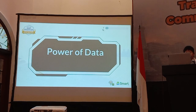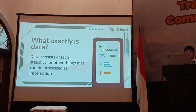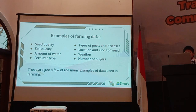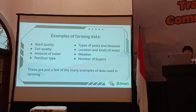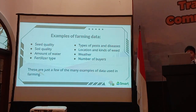Now let's discuss the power of data — what exactly is data. It consists of facts, statistics, and other things that can be processed as information. Examples of farming data include: seed quality, soil quality, amount of water, fertilizer type, pests and diseases, location and kinds of weed, weather, and the number of fires. These are just a few of the many examples of data being used in farming.